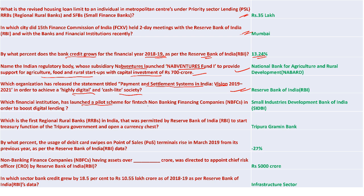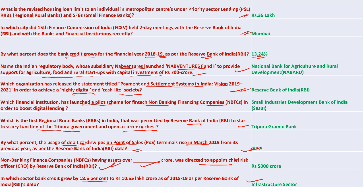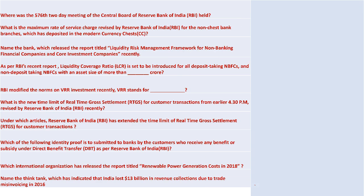SIDBI launched a pilot scheme for fintech non-banking financial companies. Tripura Grameen Bank is the first regional rural bank in India permitted by RBI to start treasury functions of the Tripura government and open a currency chest. Usage of debit card swipes at point-of-sale terminals rose 27% as per RBI data. NBFCs with assets over 5,000 crore were directed by RBI to appoint a Chief Risk Officer. Bank credit in the infrastructure sector grew 18.5% to 10.55 lakh crore as per RBI.